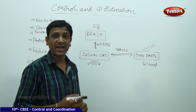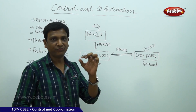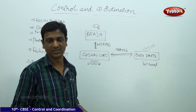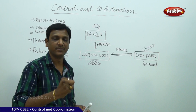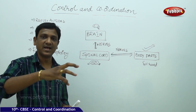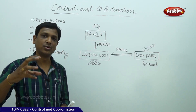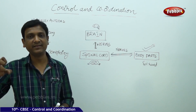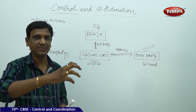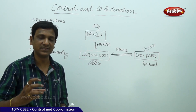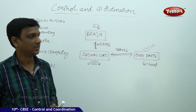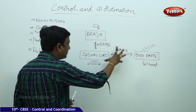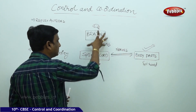In the previous class, we have seen the tips of the nerve cells present in the sense organs. They receive the information — we call them receptors. The receptors receive the information, and this information is carried by the nerves, that is neurons, which are a part of the nervous system. The information is carried in the form of electrical impulses from one nerve cell to another, collected from various parts of the body and taken to different parts of the nervous system.